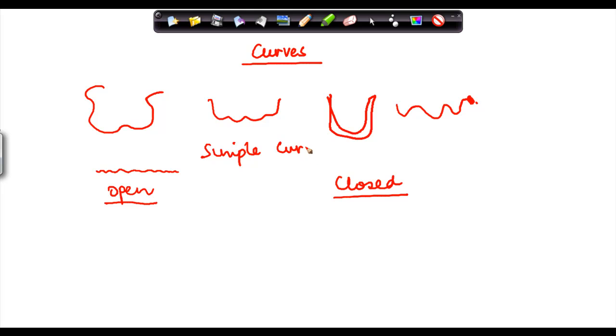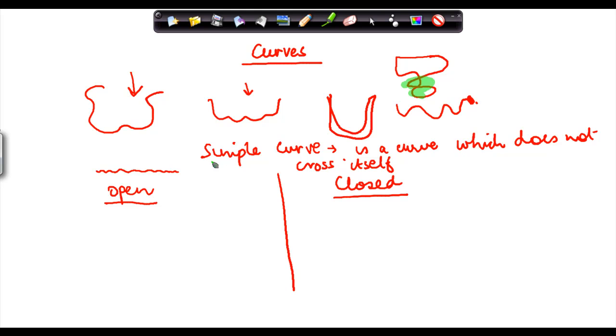Simple curve basically is a curve which does not cross itself. So like, let me give you an example. This curve nowhere crosses itself, does it? It doesn't. This curve also doesn't cross itself. Now suppose I had something like this. Now this curve basically crosses itself at this point, so this is not a simple curve. A simple curve is a curve which does not cross itself.